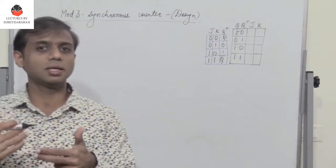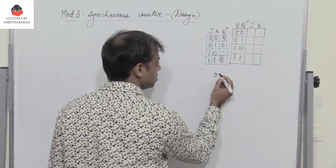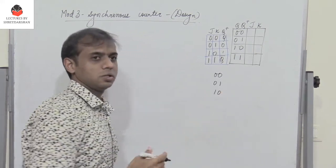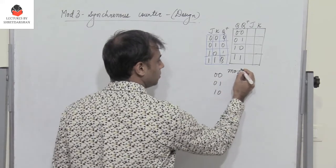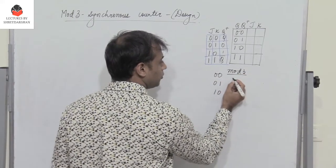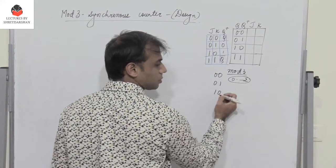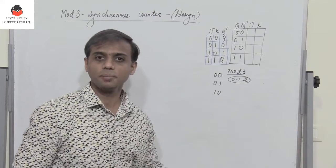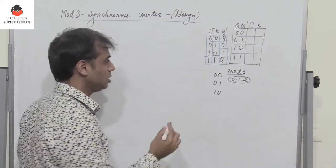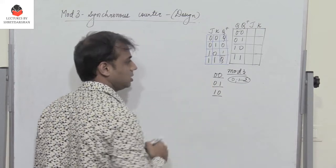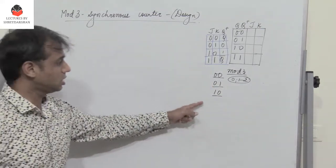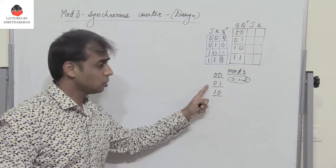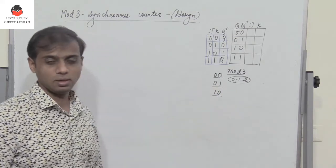Since we have a mod 3 counter, what do we mean by mod 3? Basically there are three states. Those three states are 0, 1, and 2. When operating in mod 3, the states vary from 0 to 3 minus 1, which is 2. In binary, these are represented as 00, 01, and 10.